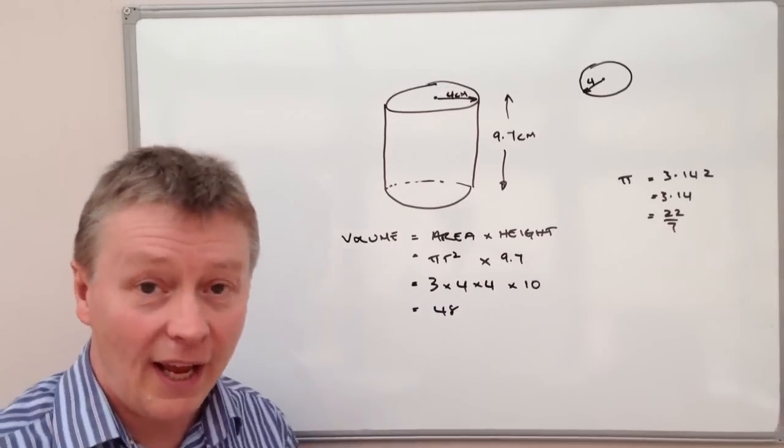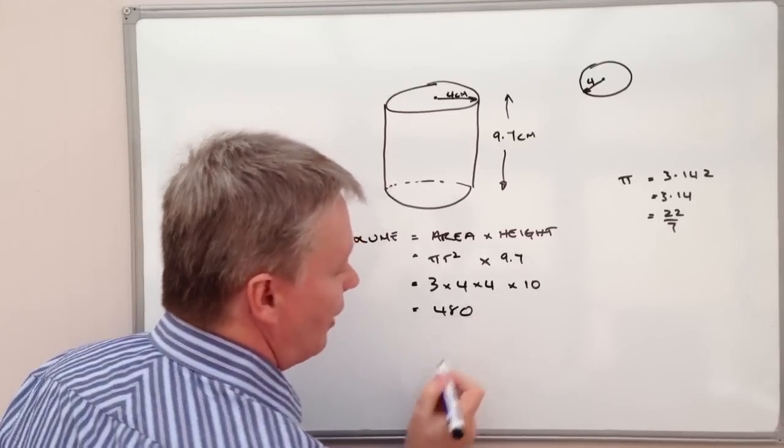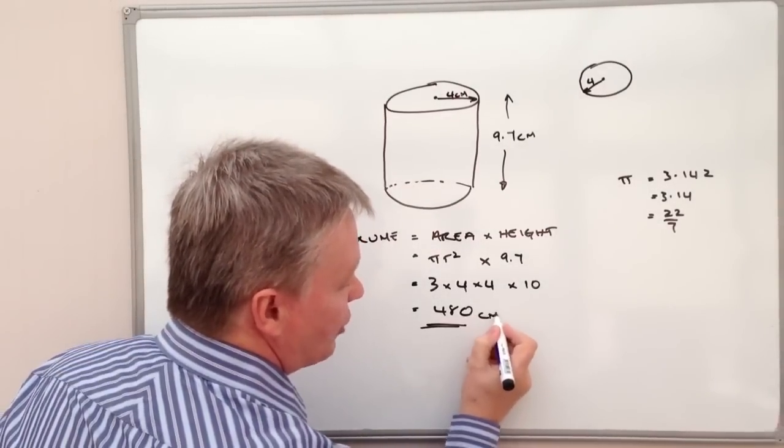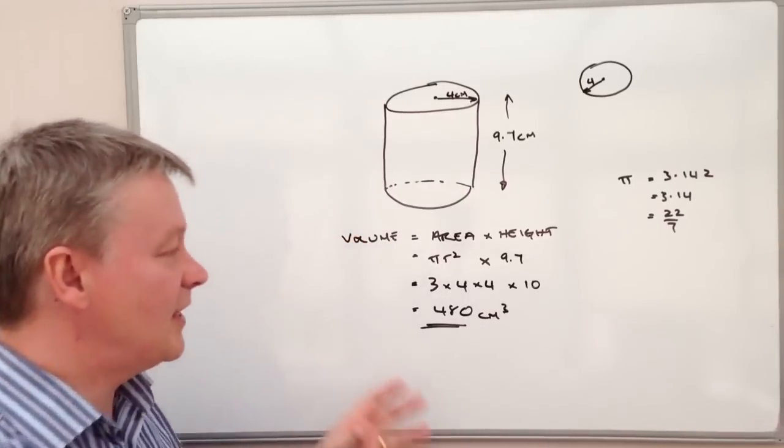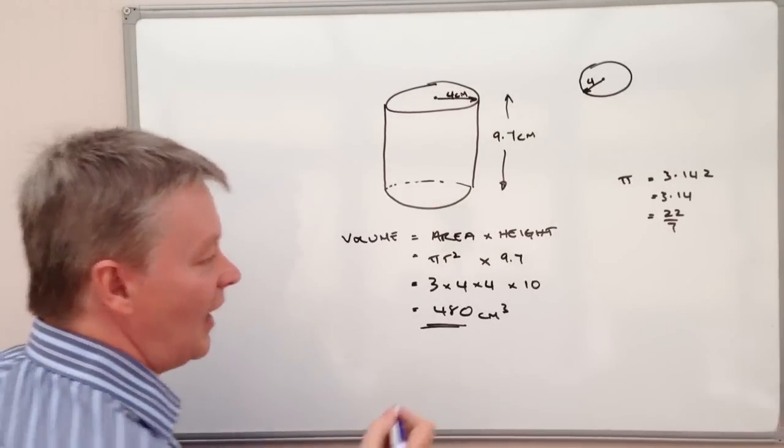And then if I'm multiplying any number by 10, all I need to do is add a 0 to the end. So in terms of my calculation, 480 centimetres cubed is perfectly good as an estimate.